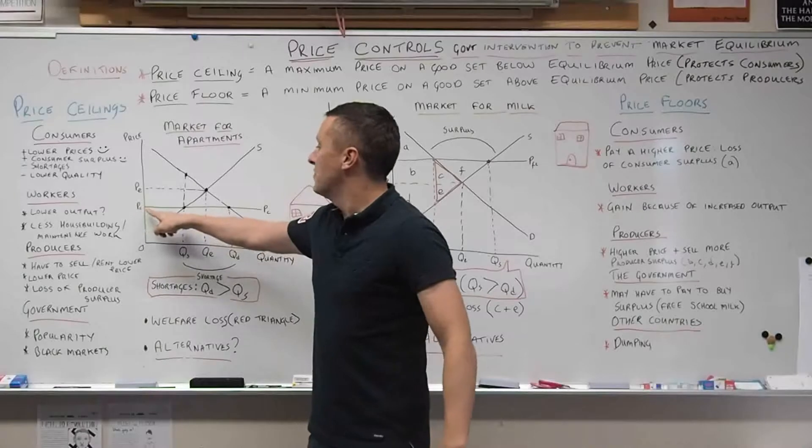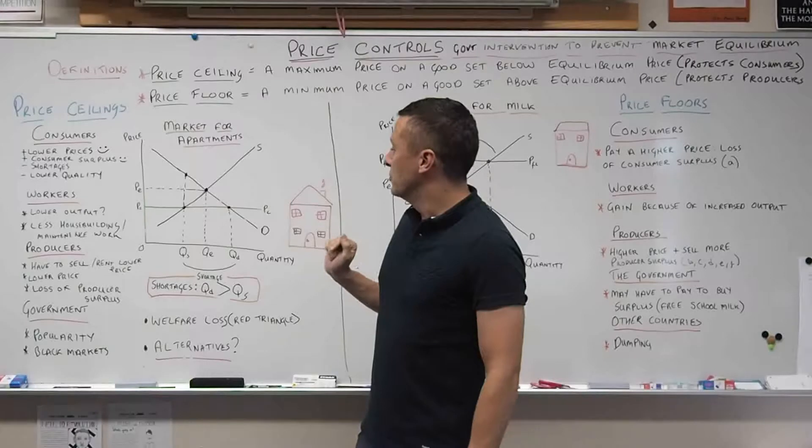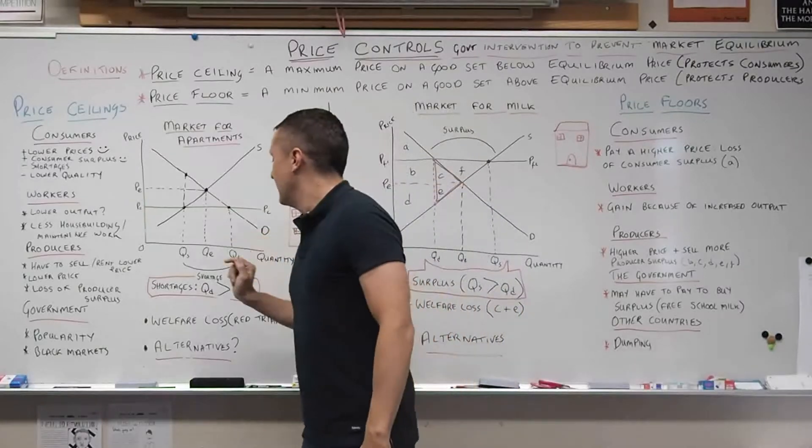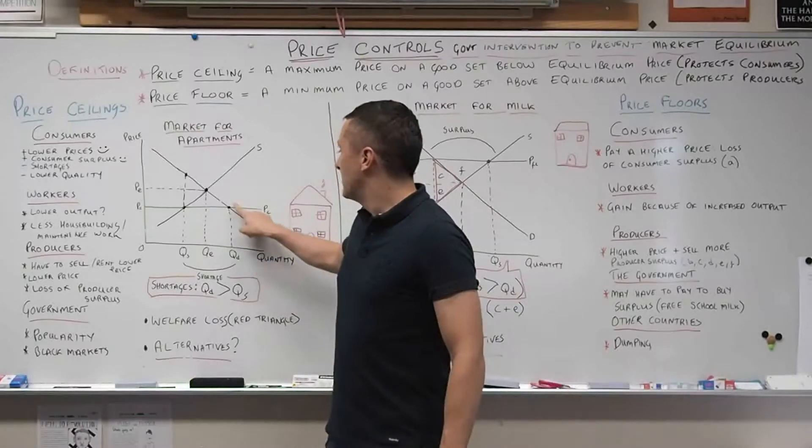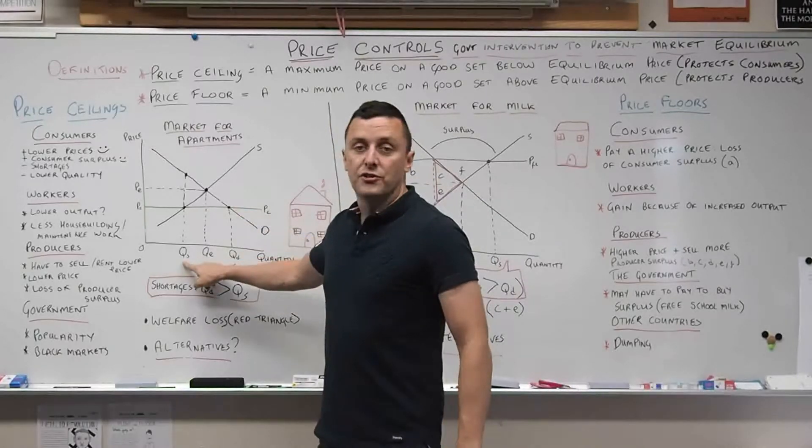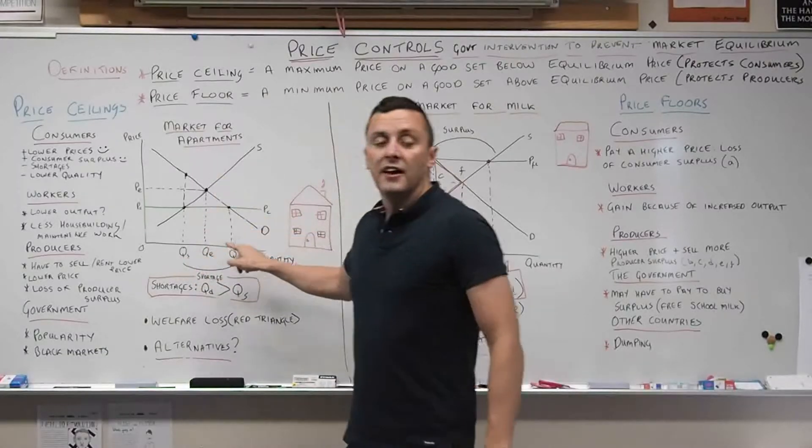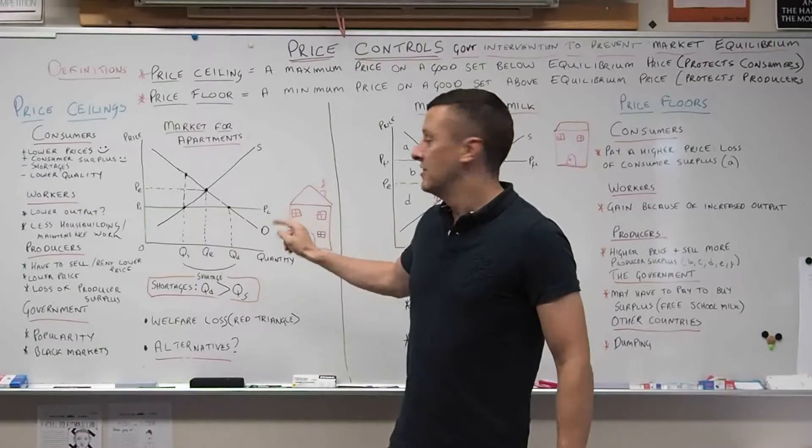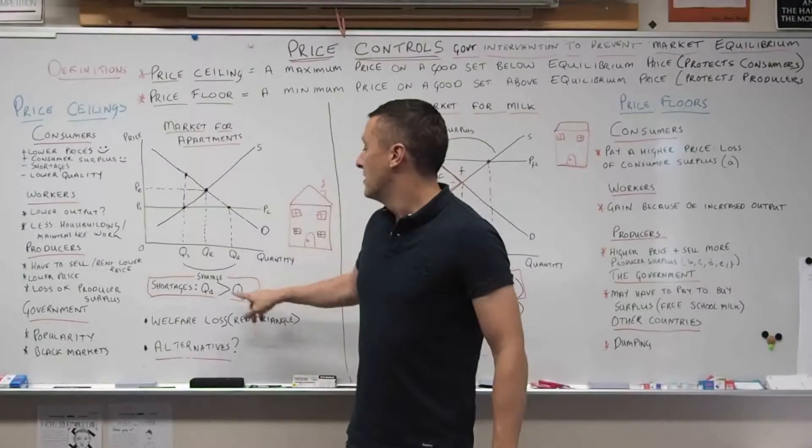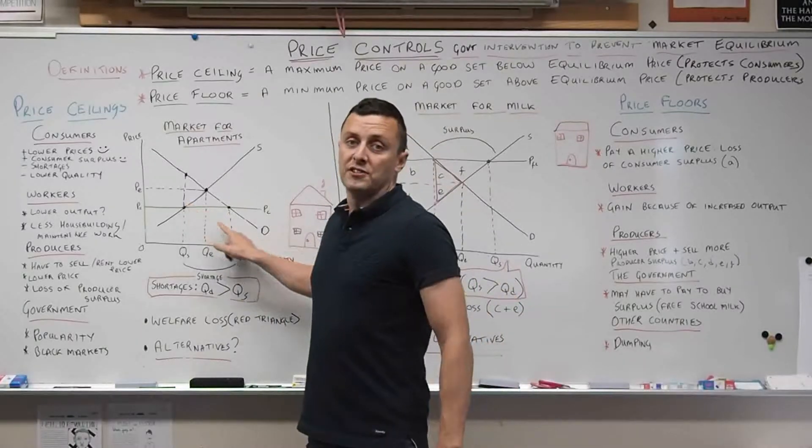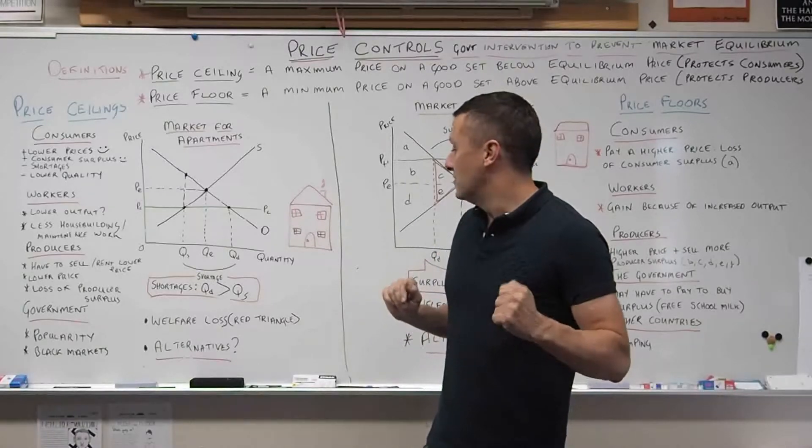So the government has introduced a price ceiling as they did in New York. We can draw that on the diagram as PC across here. The most important thing to notice is that quantity demanded at this point is much greater than quantity supplied. When quantity demanded is greater than quantity supplied, there is a shortage.